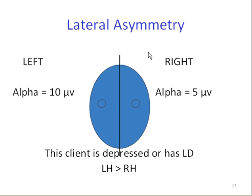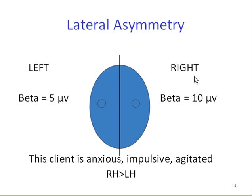For example, with asymmetry, a left hemisphere alpha asymmetry means that there is more alpha in the left hemisphere, and such a client might be depressed or may have a learning disorder. Whereas a right hemisphere beta asymmetry may indicate that the client is anxious, impulsive, or agitated because the beta is greater in the right hemisphere when compared to the left hemisphere at homologous sites.